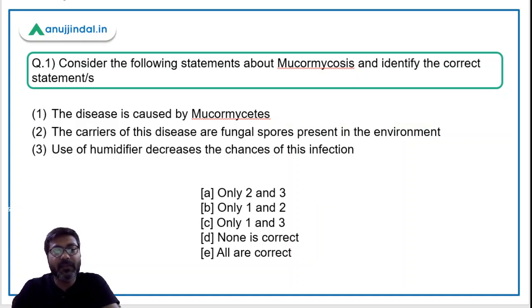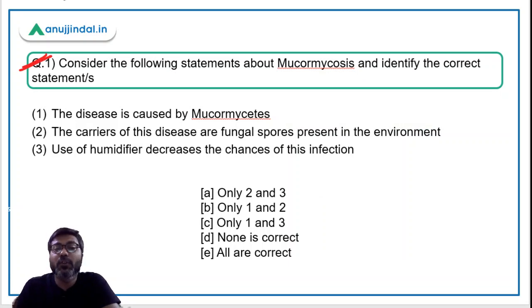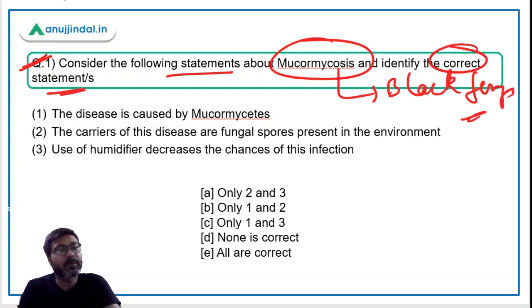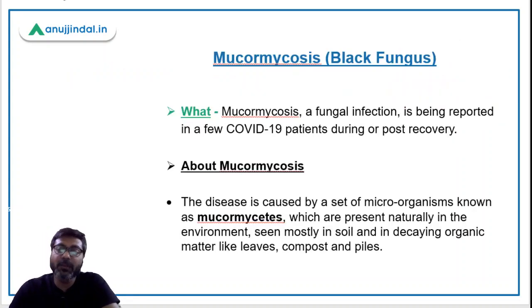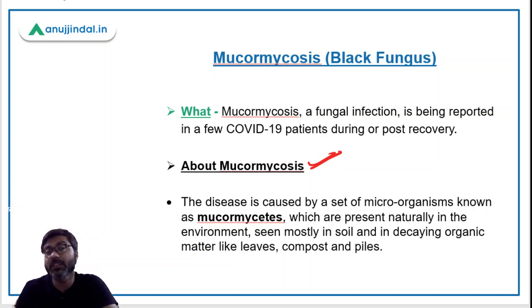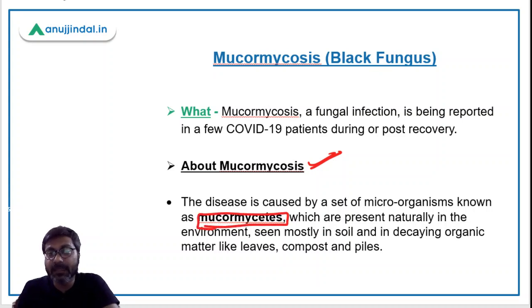Let's begin with the very first question about black fungus. You have to consider the following statements regarding mucormycosis, also known as black fungus, and identify the correct statements. Mucormycosis is a disease caused by a set of fungi known as mucormycetes. Mucormycetes is the causative organism and this fungus is present naturally in the environment.